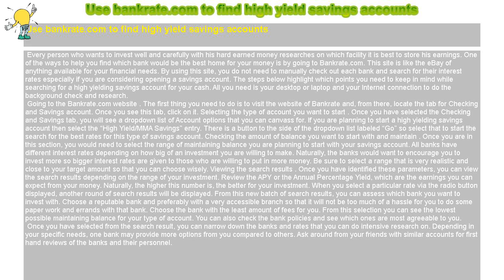Viewing the search results: once you have identified these parameters, you can view the search results depending on the range of your investment. Review the APY, or the annual percentage yield, which are the earnings you can expect from your money. Naturally, the higher this number is, the better for your investment. When you select a particular rate via the radio button displayed, another round of search results will be displayed. From this new batch of search results, you can assess which bank you want to invest with.